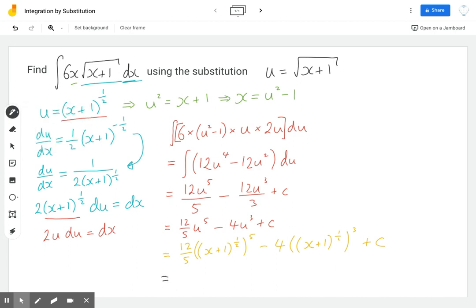And so our final answer should be 12 fifths x plus 1 to the 5 halves take away 4 x plus 1 to the 3 halves plus c. And then we are done.